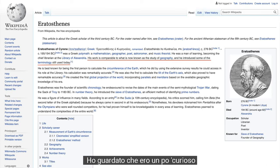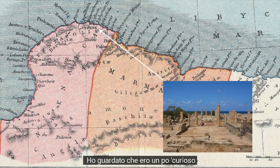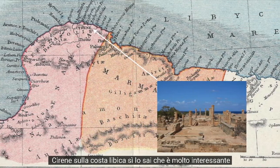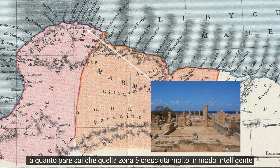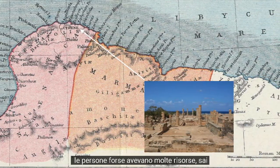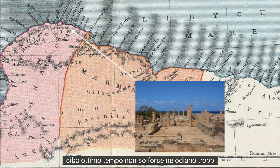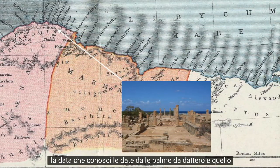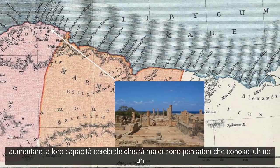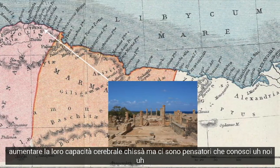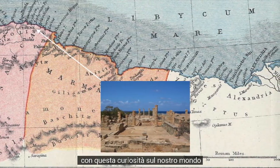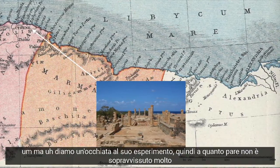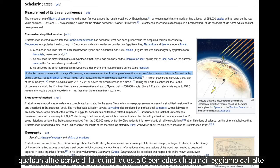I looked up Cyrene — here's an old map and a picture of its ruins on the Libyan coast. That area apparently bred a lot of smart people — maybe great weather and resources, or maybe they ate too many dates from the date palms and that increased their brain capacity. Who knows? Human beings like to explore and understand; we're endowed with curiosity about our world. But let's look at his experiment.